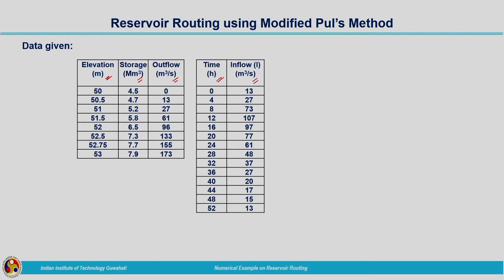While discussing reservoir routing, we make use of the continuity equation along with a storage function. Storage is a function of water surface elevation, and outflow is also a function of water surface elevation. From that we find a relationship between Q and storage — that is the storage function — and then we use the continuity equation to find the outflow hydrograph.